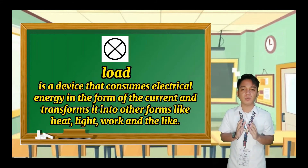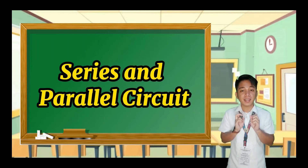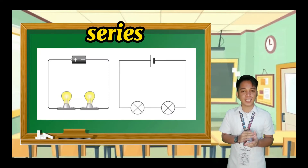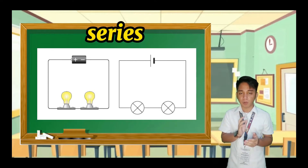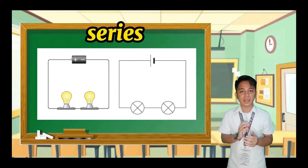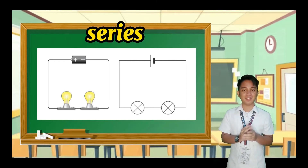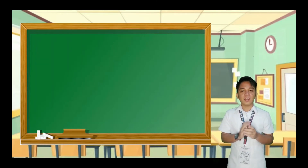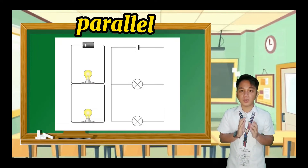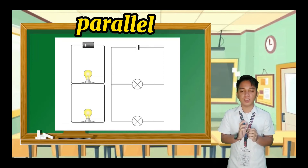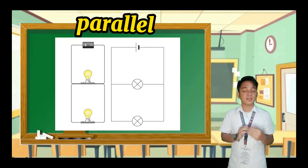Let's refresh your knowledge about the two common circuits, which are series and parallel. A series circuit comprises a path along which the whole current flows through each component. You can see the pictorial diagram on the left side while on the right side is the schematic diagram. A parallel circuit has branches so the current divides and only part of it flows through any branch. The pictorial diagram is on the left side while on the right side is the schematic diagram.